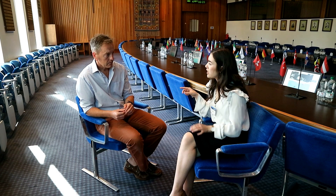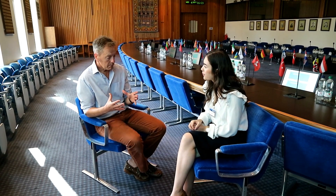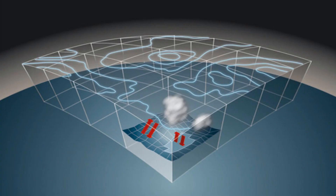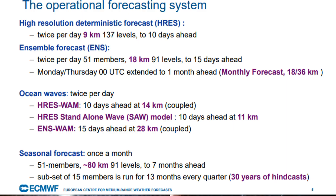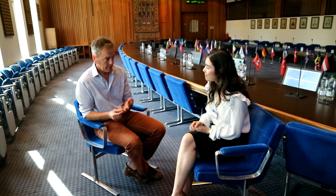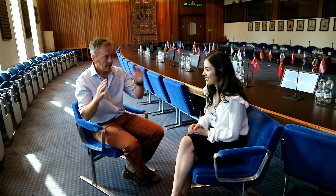Currently we model the atmosphere by breaking the globe up into a grid where each grid spacing is roughly nine kilometers apart. At every grid point we model the atmosphere in three dimensions, vertically up to a height of 80 kilometers. The number of grid points we are operating on mathematically and predicting the weather for is a mind-boggling number of locations — nine kilometers apart, up to 80 kilometer altitude, over every spot on the globe.